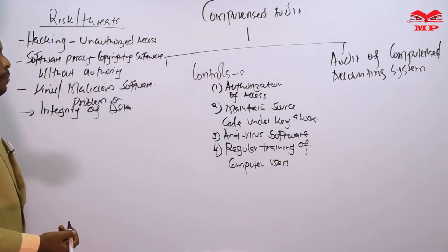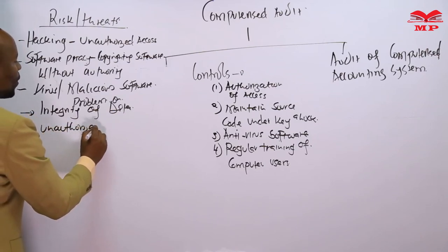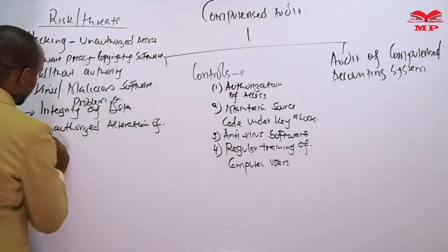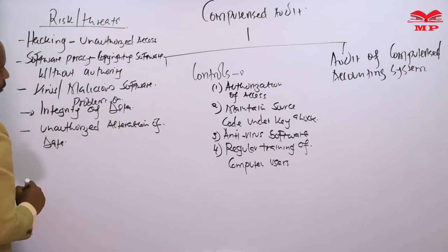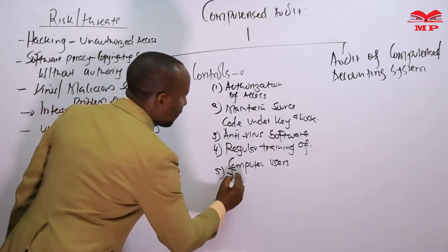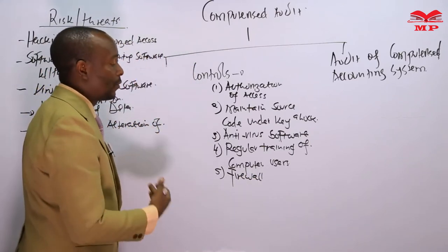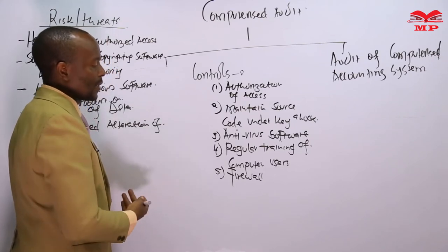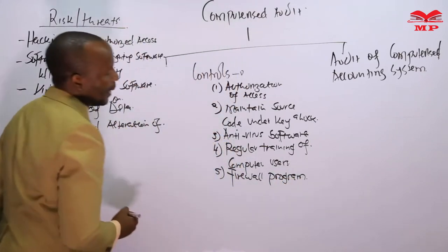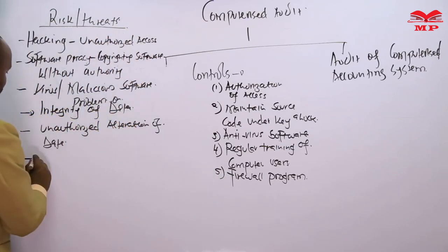There is also a scenario whereby there is unauthorized alteration of data or database. To solve that, you can use firewalls. A firewall is a program that acts like a gatekeeper — it can scrutinize all the passwords being used to access the system. Firewall programs control entry into the computer system.